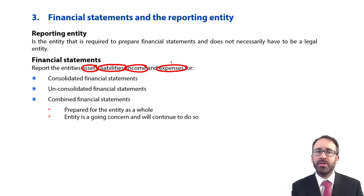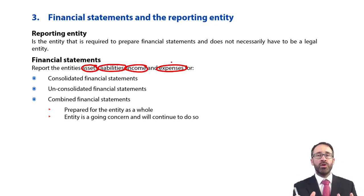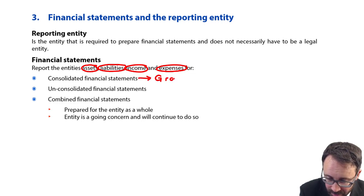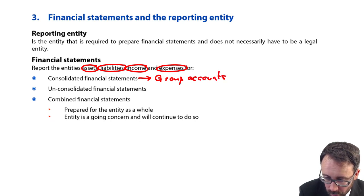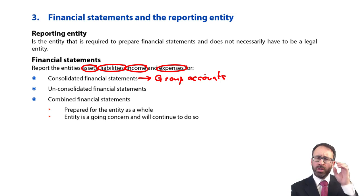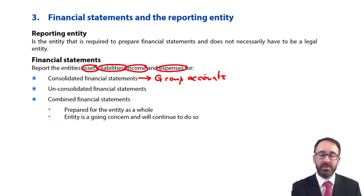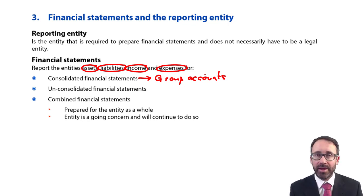There is a group statement of changes in equity as well, but we don't really cover that within financial reporting. So effectively you've got to prepare financial statements for a set of consolidated financial statements — that's basically your group accounts. You've touched upon group accounts briefly in financial accounting, whereby you have a parent that controls a subsidiary. If you are preparing the group set of accounts, then you need to report for that group the assets, the liabilities, the income, and the expenditure.